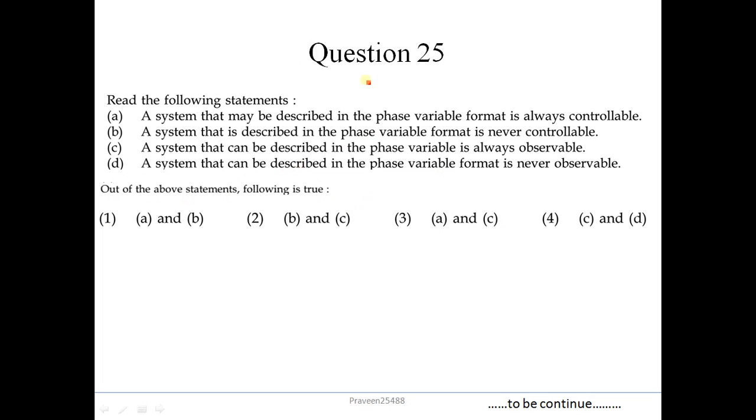Question number 25: Read the following statements. A system that may be described in the phase variable format is always controllable - this is correct. Described in the phase variable format is never controllable - this is not correct. Described in the phase variable is always observable - this is also correct. Can be described in the phase variable format is never observable - not correct. So A and C is correct. Correct option is 3.